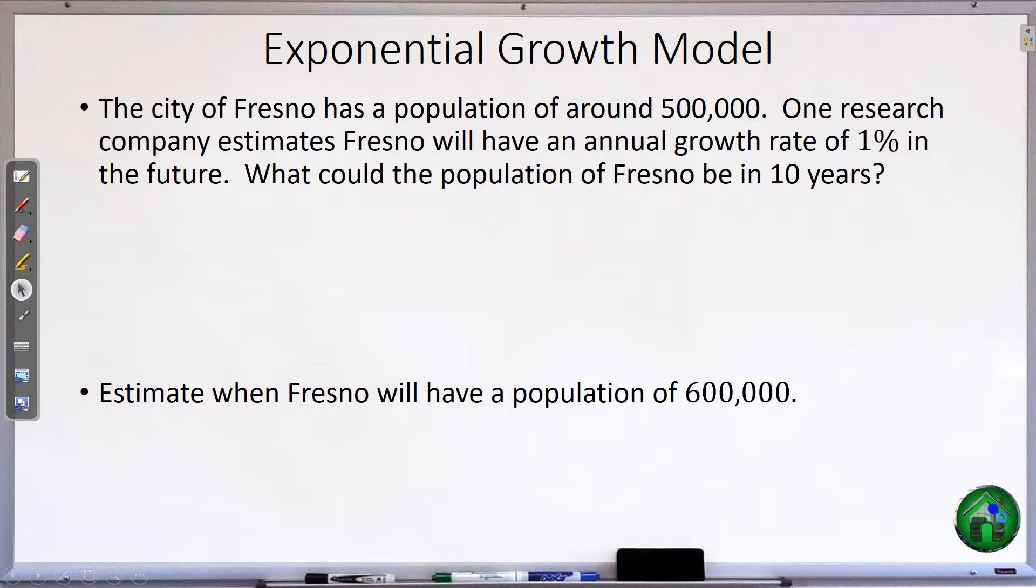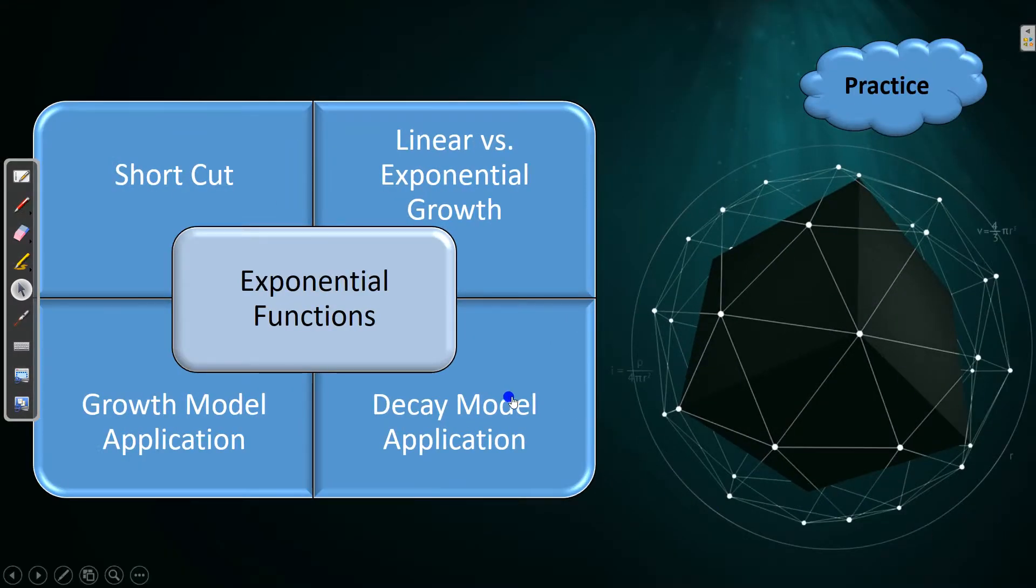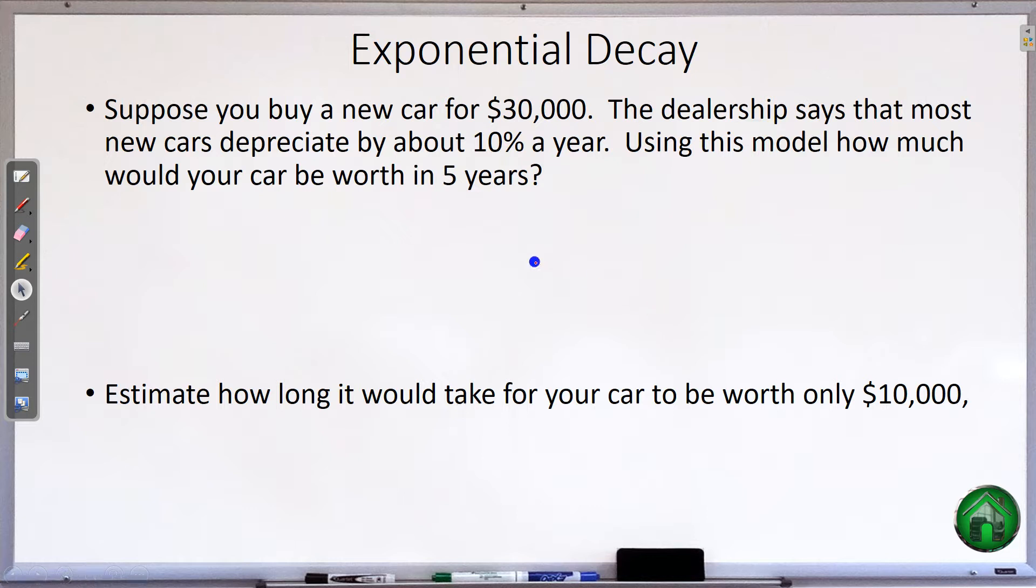Let's take a look at one more. Our decaying model. So the growth rate is getting bigger. Decay is going to be getting smaller. So not everything gets bigger. So let's suppose you buy a car for $30,000, and the dealership says that most new cars depreciate by about 10% a year. So hopefully you know a car, if you buy it new, the next year it will not be worth nearly as much. The value does go down. And so using a model of 10% a year, we're going to see what our car is worth after 5 years. So y is equal to, first is our a value, our starting, and so we are starting at 30,000. So that's our a.